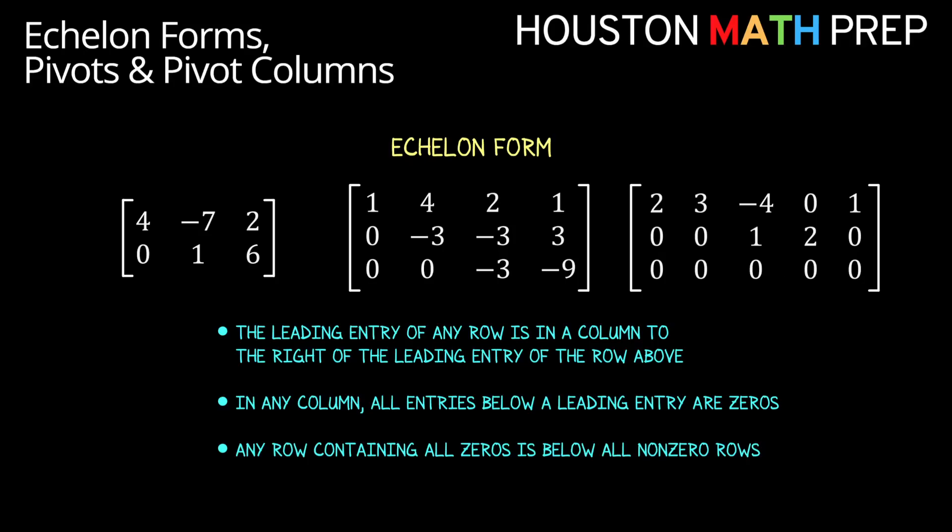These three things, if true, give us our lower staircase of zeros look to our matrix, and mean the matrix is in echelon form.